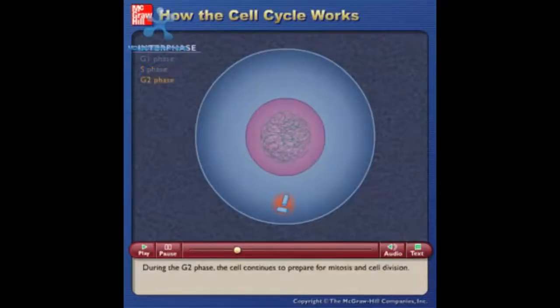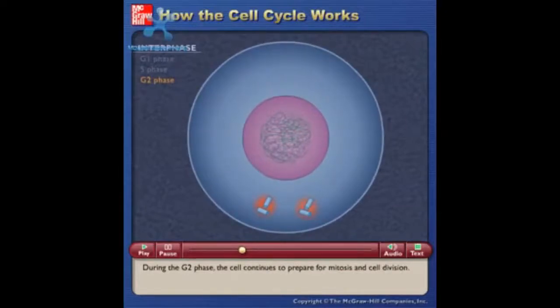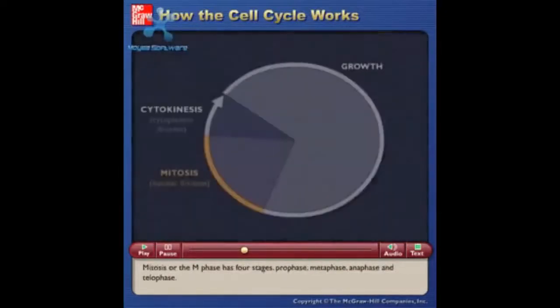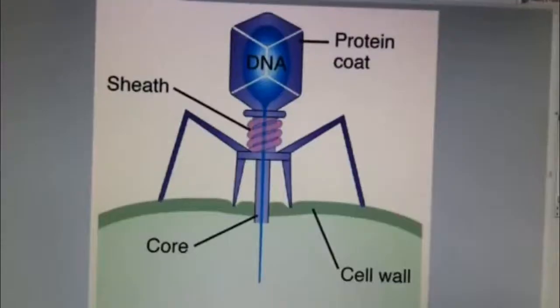During the G2 phase, the cell continues to prepare for mitosis and cell division. Mitosis or the M phase has four stages: prophase, metaphase.